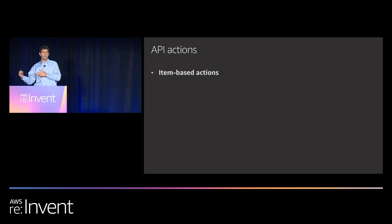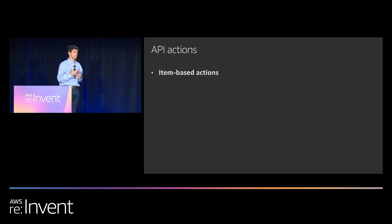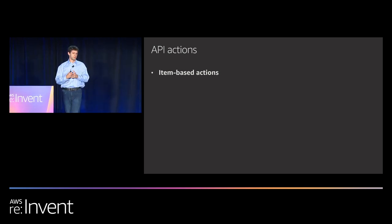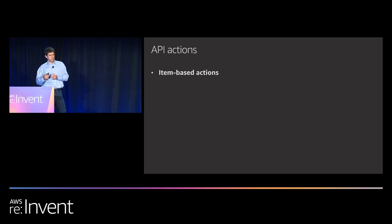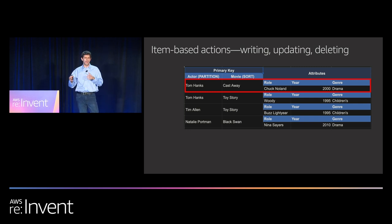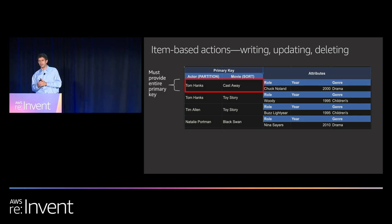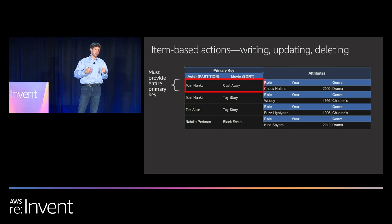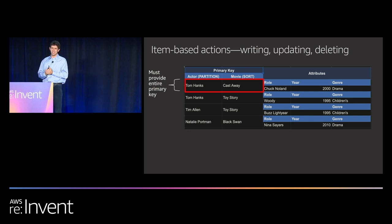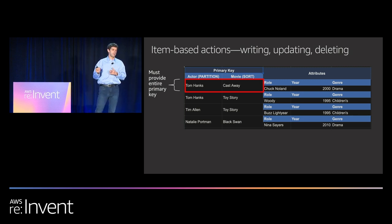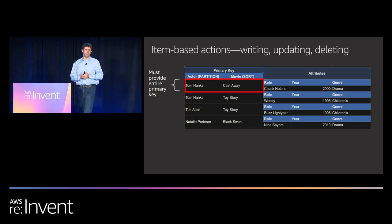You interact with DynamoDB via the AWS SDK — it's API-driven rather than query-driven like a relational database. Three main buckets of API actions. First are item-based actions: writing, updating, or deleting a single item. You must provide the entire primary key — to delete Tom Hanks and Castaway, you specify partition key Tom Hanks and sort key Castaway. You can't say delete all items where actor equals Tom Hanks — you need the full primary key.